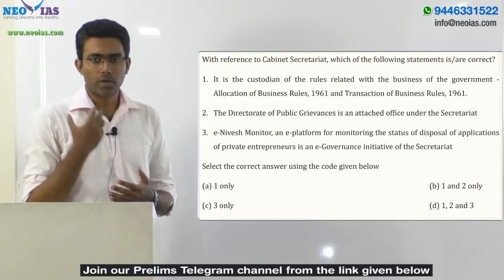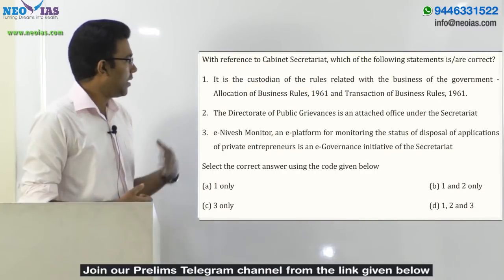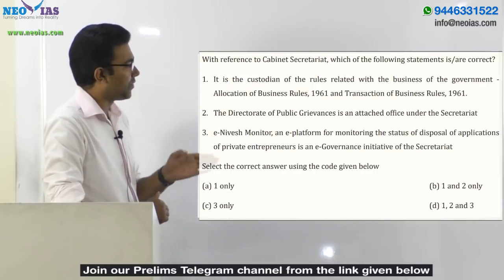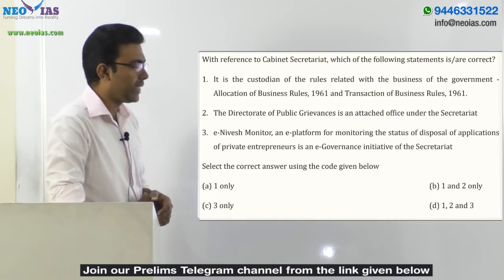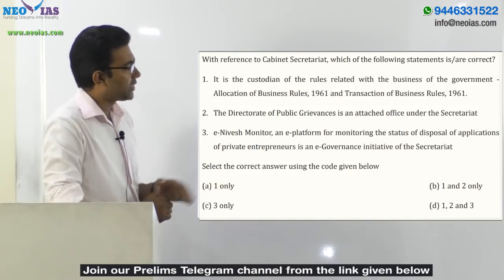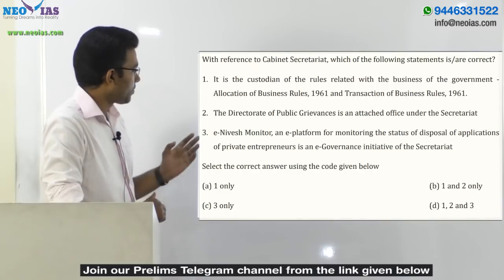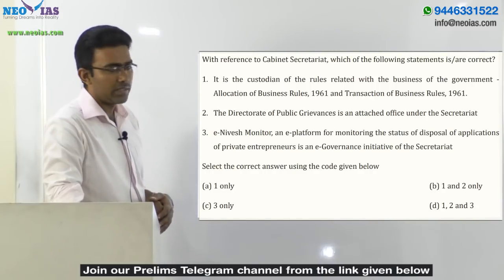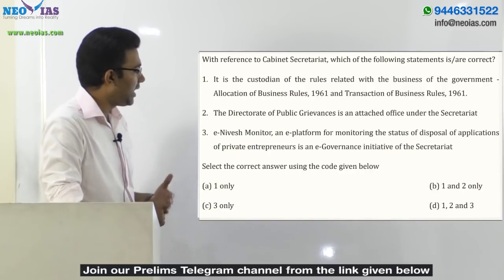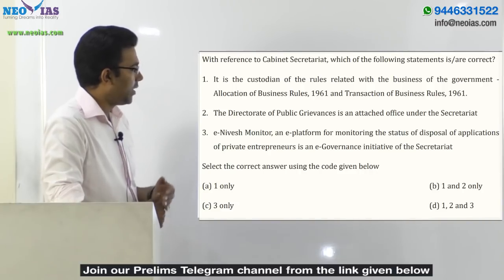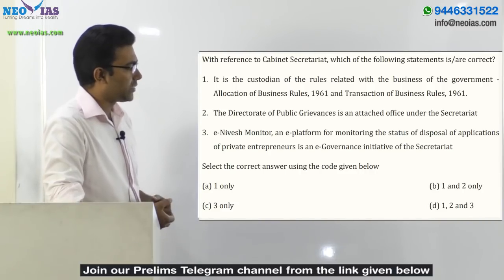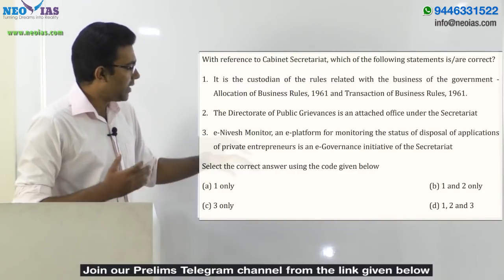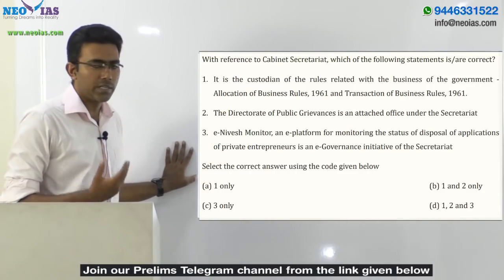The demand of the question is for the correct statement. The first statement: it is the custodian of the rules related to the business of the government — Allocation of Business Rules 1961 and Transaction of Business Rules 1961. Second statement: the Directorate of Public Grievances is an attached office under the secretariat. Third: e-Nivesh Monitor, an e-platform for monitoring the status of disposal of applications of private entrepreneurs, is an e-governance initiative of the secretariat.